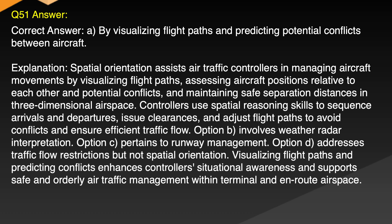Explanation: Spatial orientation assists air traffic controllers in managing aircraft movements by visualizing flight paths, assessing aircraft positions relative to each other and potential conflicts, and maintaining safe separation distances in three-dimensional airspace. Controllers use spatial reasoning skills to sequence arrivals and departures, issue clearances and adjust flight paths to avoid conflicts and ensure efficient traffic flow. Option B involves weather radar interpretation. Option C pertains to runway management. Option D addresses traffic flow restrictions but not spatial orientation. Visualizing flight paths and predicting conflicts enhances controllers' situational awareness and supports safe and orderly air traffic management.